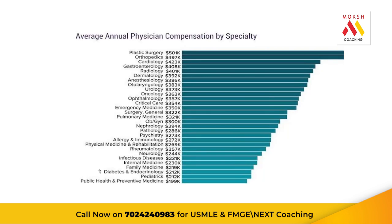Now let's talk about salaries after you're done with residency. This chart is from Medscape. Typically the lowest salaries are in public health and preventive medicine at around $199k, and the highest are in plastic surgery at over $500k. This varies between each state — this is just the average across all the United States. For example, cardiologists make $423k, dermatologists make $392k, surgery makes $322k, pathology makes $286k, and family medicine is $219k — though I've seen family medicine salaries in the $450k range, so this is just an average.